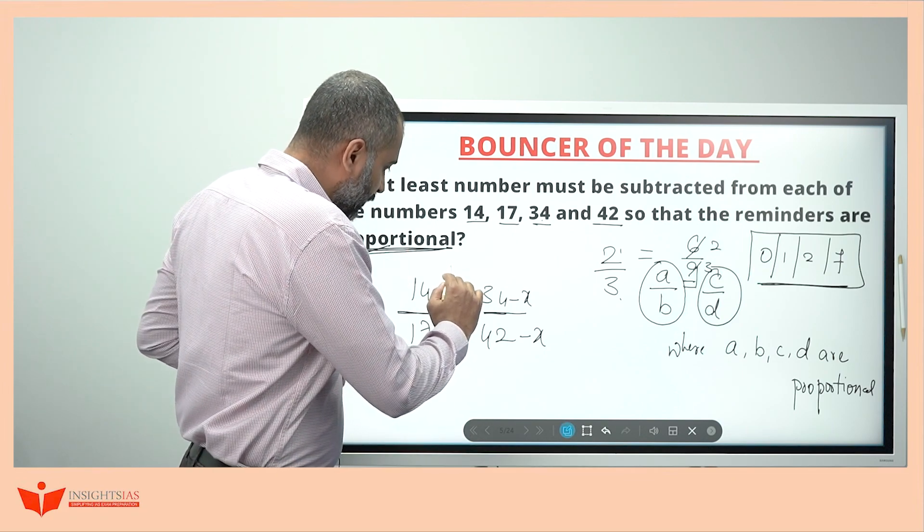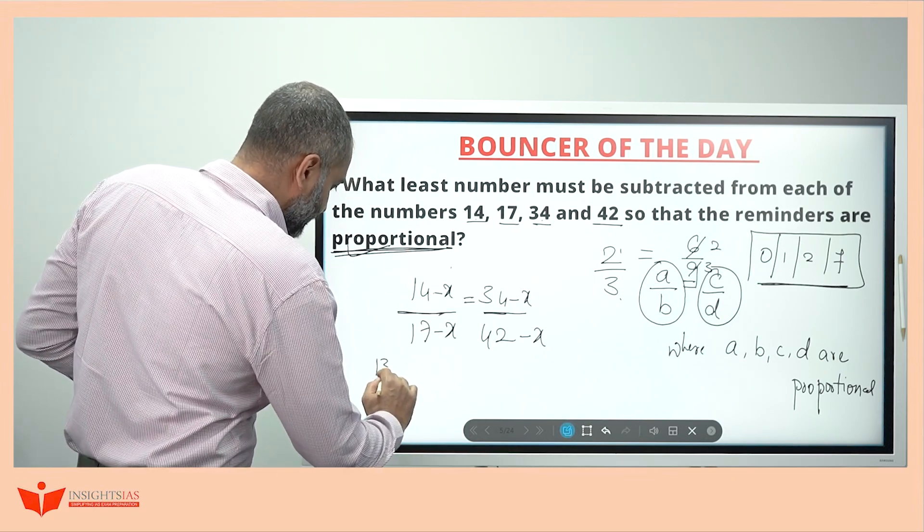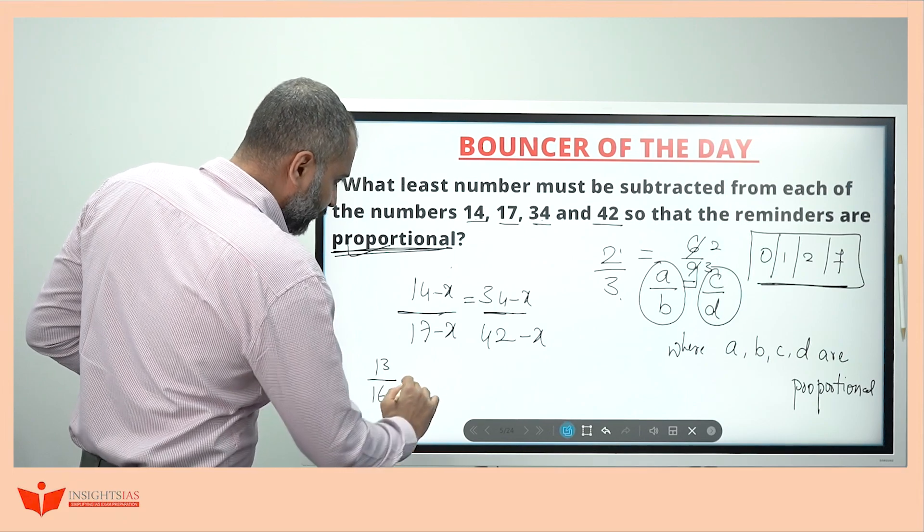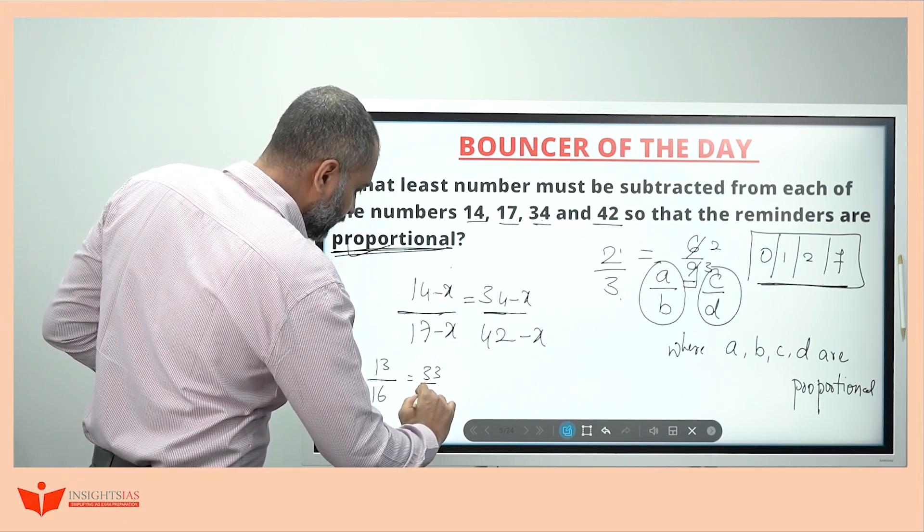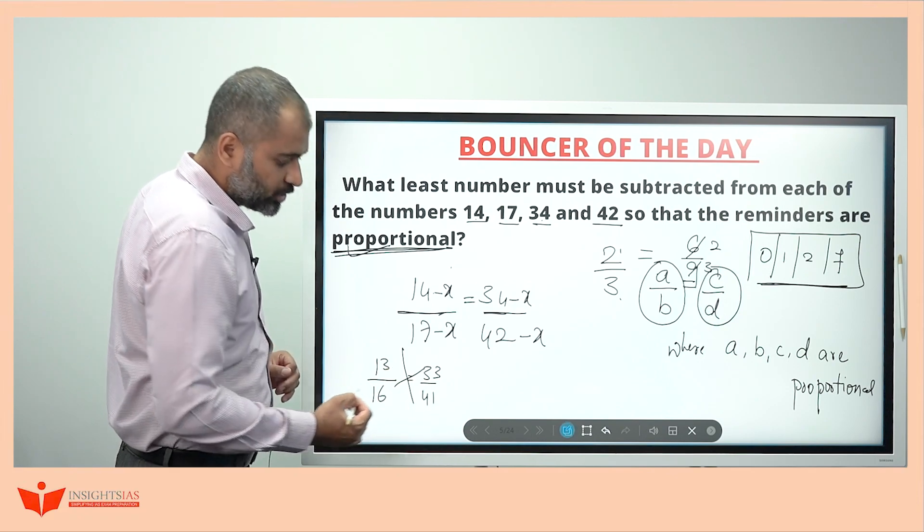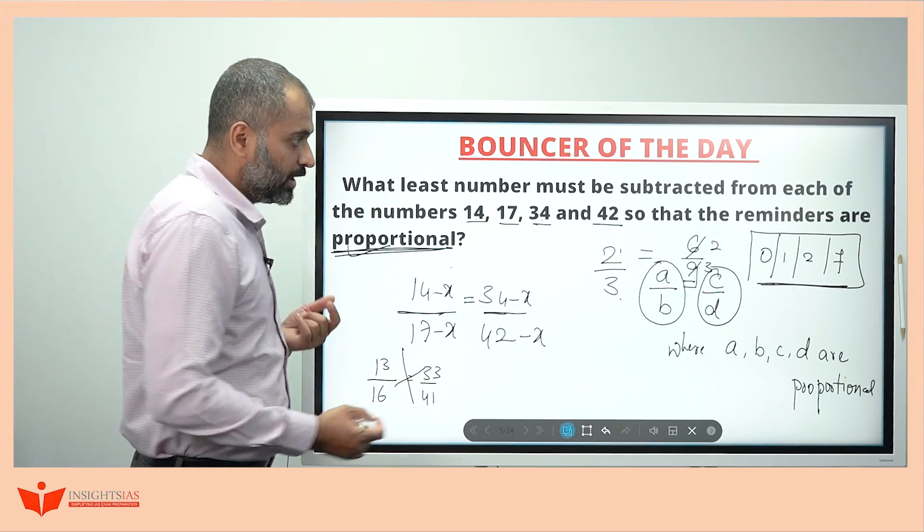If you put 1 here at the place of 1, see this becomes 13, this becomes 16, this becomes 33, this becomes 41. See, 13 by 16 is not proportionate to 33 by 41. Next one.